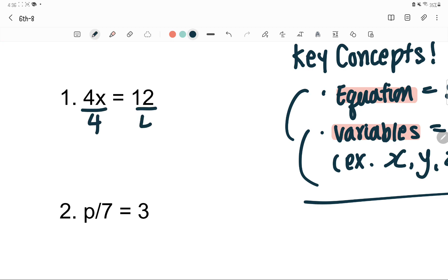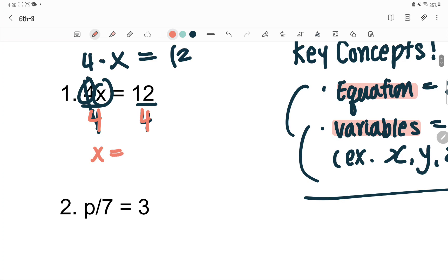How do you get rid of 4? Because this side, the one that the variable has, has 4 and x, which is 4 times x equals 12. You have to get rid of 4 by dividing by 4 to cancel it out and leave the x by itself. The most important thing is that you have to divide both sides by 4. The answer is x equals 3, because 12 divided by 4 is 3.